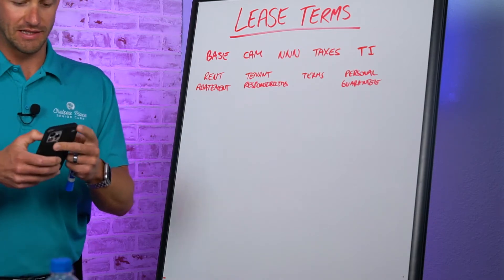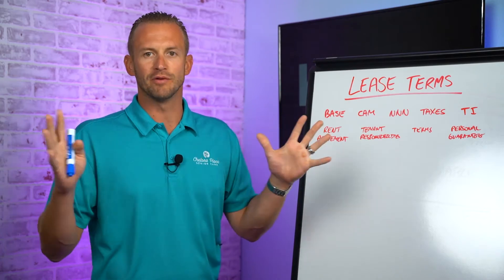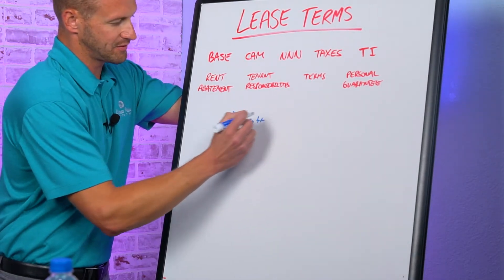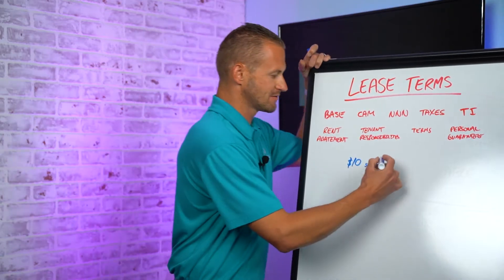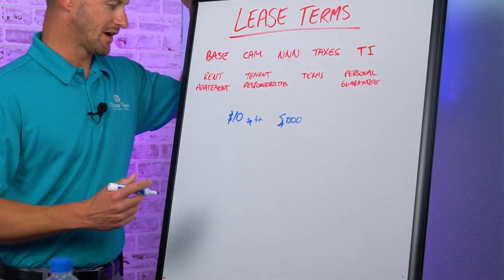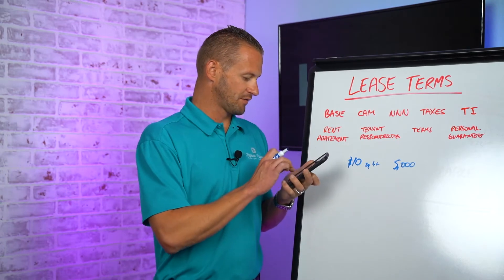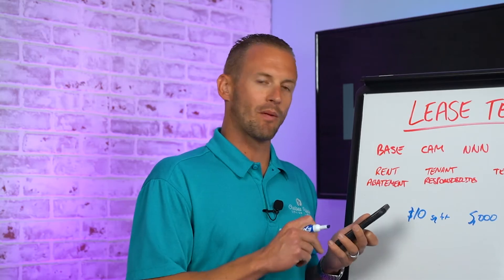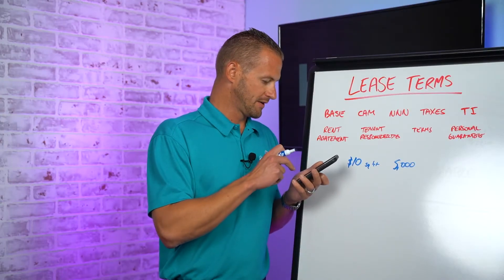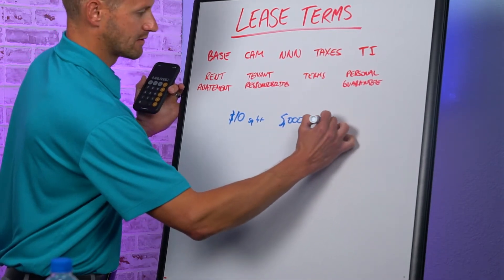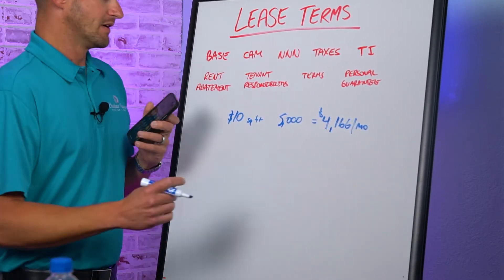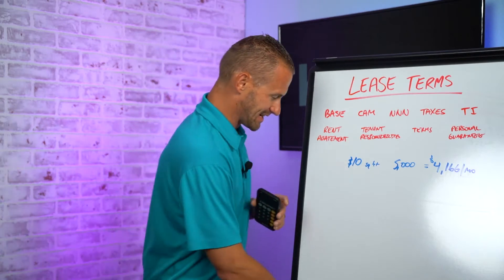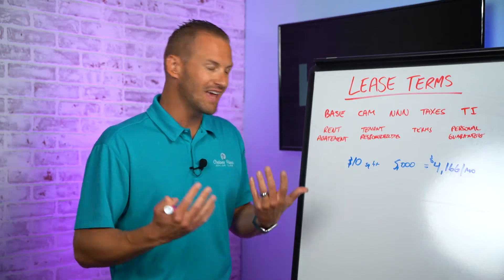Just for simple rounding sake, let's say base rent is $10 a square foot and you need 5,000 square feet for your adult daycare. You calculate 5,000 times $10, which gives you the annual cost of $50,000 per year. Divide that by 12 and you get $4,166 per month. But don't get too excited, because a lot of times people forget there are additional costs on top of that.